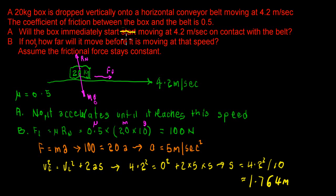So the box on hitting the conveyor belt would accelerate at 5 metres per second squared for 1.764 metres until it reached the speed of 4.2 metres per second, the speed of the belt.